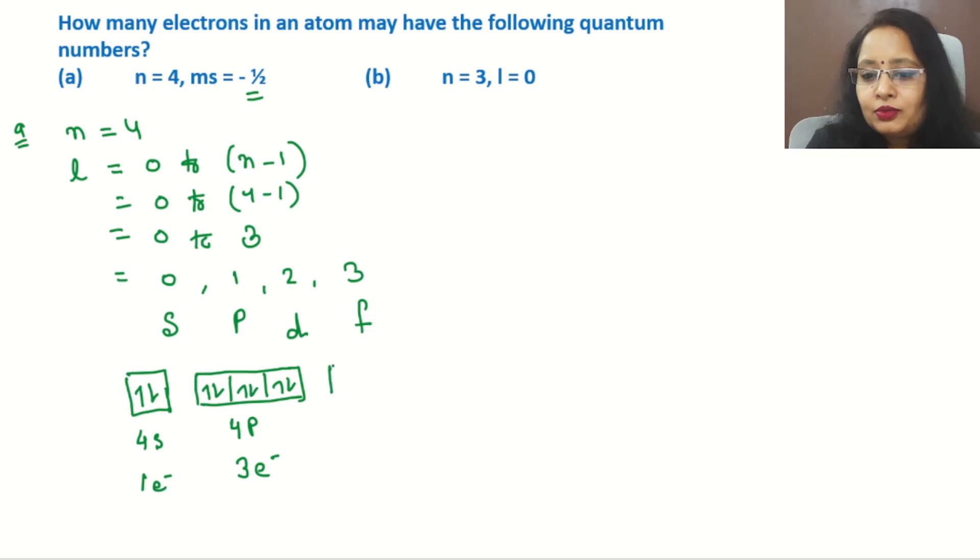Now for d: it has 5 orbitals. This is 4d. Number of electrons: 1, 2, 3, 4, 5 are positive spins, and 1, 2, 3, 4, 5 have negative spin. So we can write 5 electrons having negative spin. Negative spin means minus 1/2 spin.